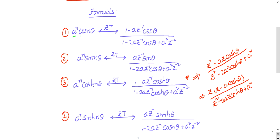First, for cos theta: a^n·cos(nθ) has a Z-transform of (1 − a·Z⁻¹·cosθ) divided by (1 − 2a·Z⁻¹·cosθ + a²·Z⁻²). Try to remember it in terms of Z⁻¹, Z⁻², as it is useful when finding the inverse Z-transform. This is a good way to remember.